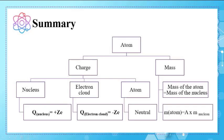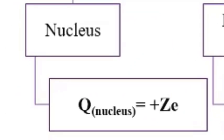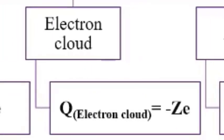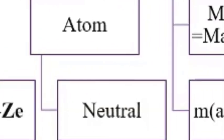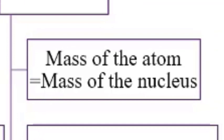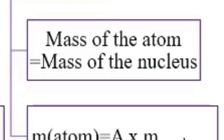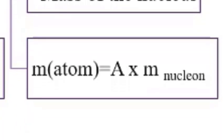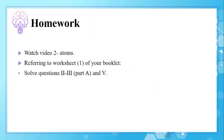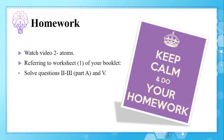Finally, it's time to summarize. In this session, we learned how to calculate the charge and mass of an entire atom. To calculate the charge of the nucleus, use Q = +ZE; to calculate the charge of the electron cloud, use Q = −ZE. Since these are opposite, an atom is electrically neutral. The mass of the atom is concentrated in its nucleus, calculated using A × mass of a nucleon. For the next period, watch the video again and solve questions 2, 3 part A, and 5 from worksheet 1. Keep calm and do your homework.